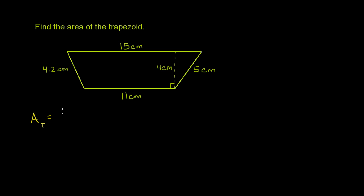So the average of the bases is 15 plus 11 divided by 2. Sometimes you'll see in formulas this is base 1, this is base 2. A trapezoid has two parallel bases. So it's the average of the bases, 15 plus 11 over 2, times the height. And the height here is 4 centimeters, times 4.